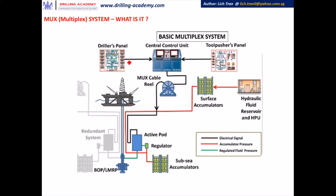For a BOP function, there is only an electric signal sent from either the driller's panel or the tool pusher's panel to the central control unit. The central control unit will then relay this signal down to the subsea electronic modules (SEMs) in the pods — in the active pod and the inactive pod. This is the MUX cable; it goes from the central control unit through the reel down to both pods. The subsea electronic modules in the pods contain PLCs, which receive and decode the signal and trigger the coil of the corresponding solenoid valve. This solenoid valve is electrically energized and hydraulically operated — this is the first major difference from the indirect hydraulic system, where the solenoid valve is at surface and is electrically energized and air operated.